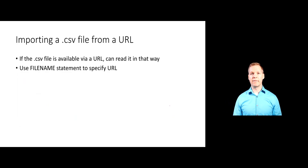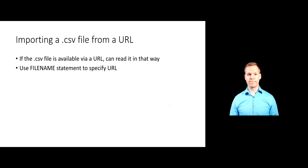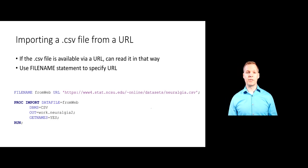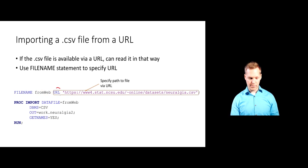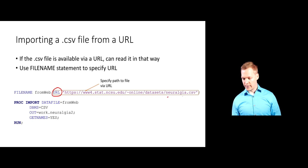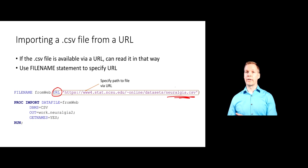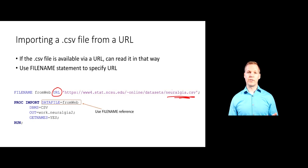Another option is to read data from a URL — directly from a website. To read in from a URL, we use the FILENAME statement to create a reference to the URL. We give it a name — for example, fromweb — and add the URL keyword before our path. This tells SAS the data will be read from the internet. Then in PROC IMPORT, we change DATAFILE from the local path to this URL reference. Here we save it in the work library as a dataset called neuralgia2.